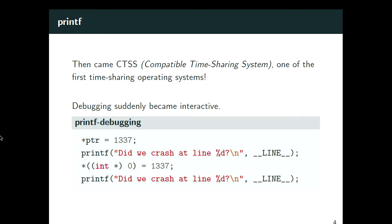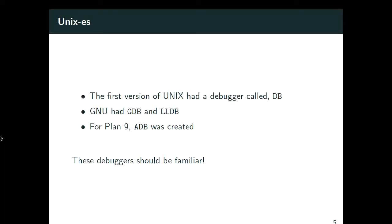A few years later, computing resources grew stronger and a new OS called CTSS — the Compatible Time Sharing System — allowed multiple users to log in simultaneously. At that point people realized they could do printf debugging: you put a print statement in and it gives you clues about what's happening. For instance, you could see where you'd get a segfault. This became a nice cycle where you add printfs, bisect the crash, and eventually find the offending line.